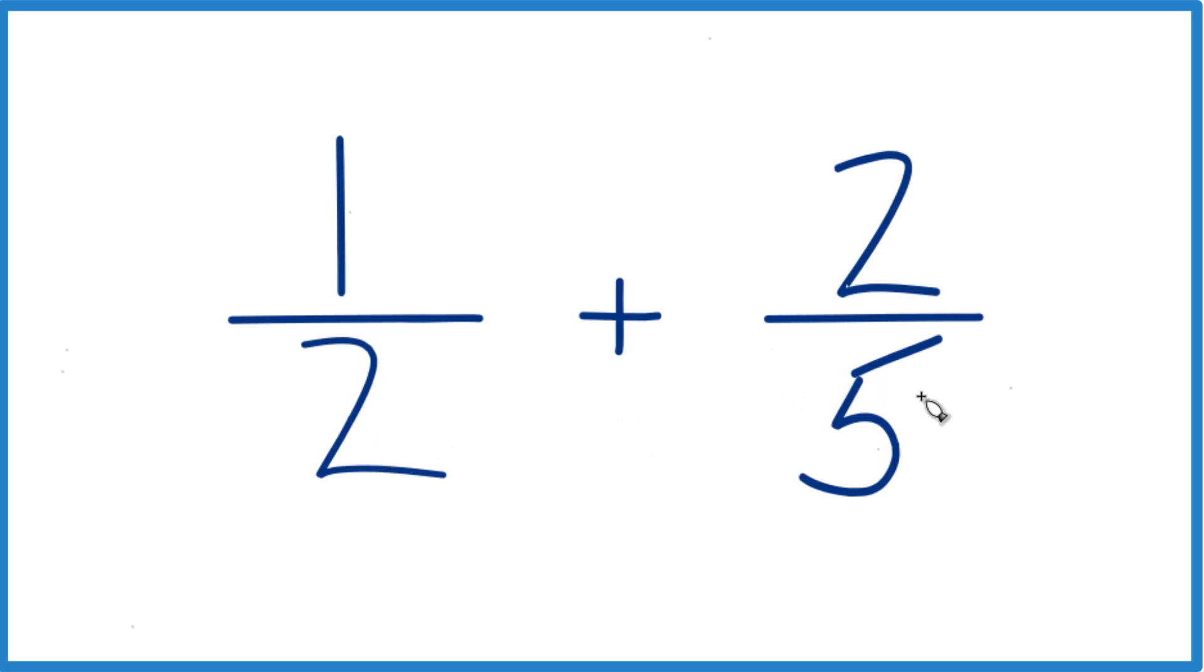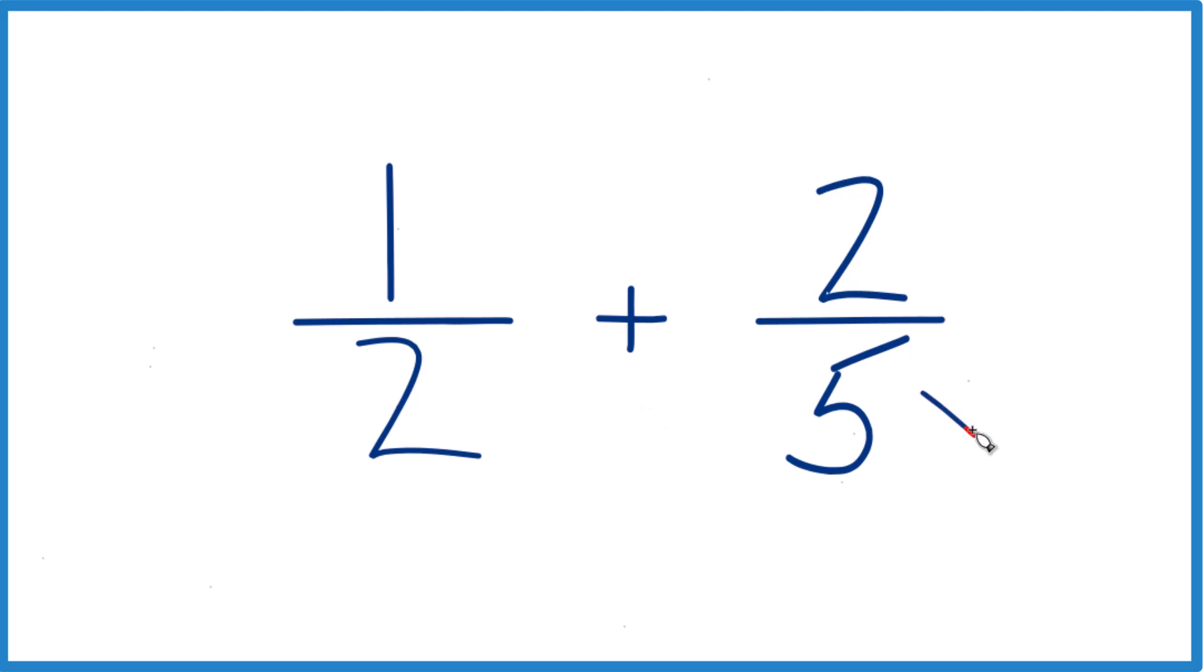Why don't we multiply two times five and five times two? So five times two, that would give us ten, and two times five, that would give us ten.